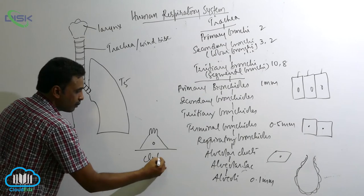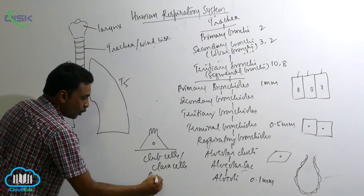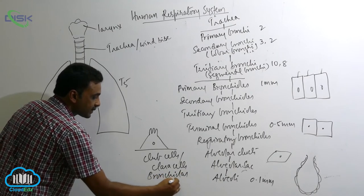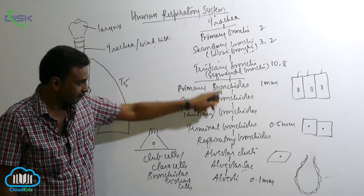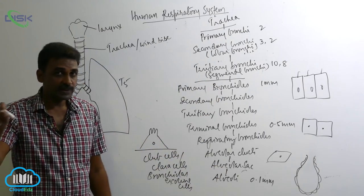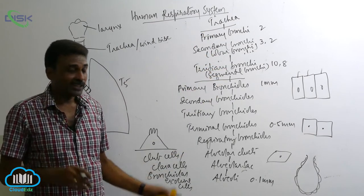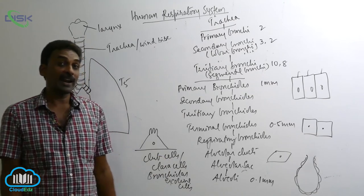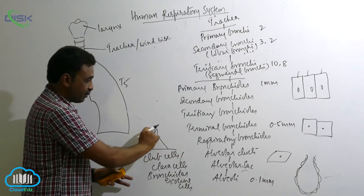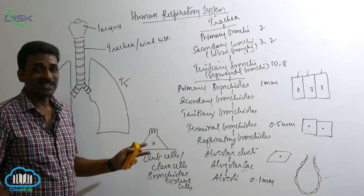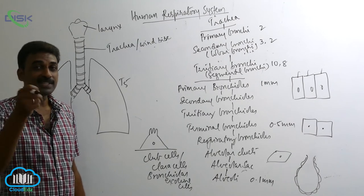When you proceed through the bronchioles, you will find something else not seen in bronchi — cells called club cells, also called Clara cells, also called bronchiolar exocrine cells. They are elevated dome-like cells with microvilli.